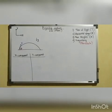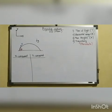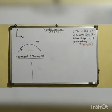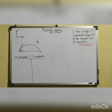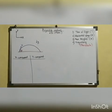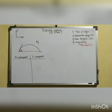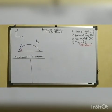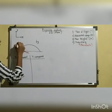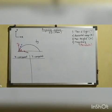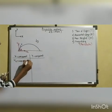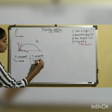Projectile motion is a two-dimensional motion, that is motion in a plane. Here I have considered the XY plane for the motion. The body is projected from the ground and lands on the ground, with initial velocity u at angle of projection theta. This velocity can be resolved into two components: the x-component ux = u cos theta, and the y-component uy = u sin theta.